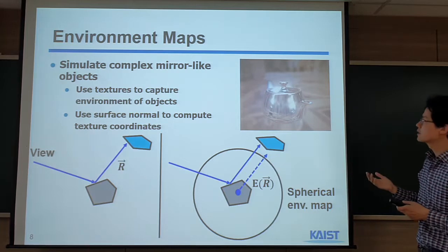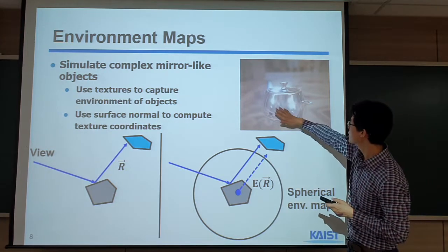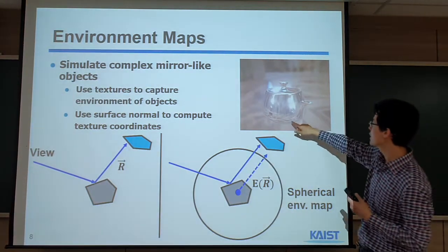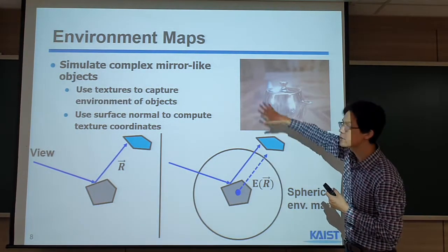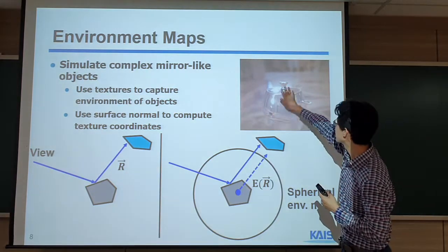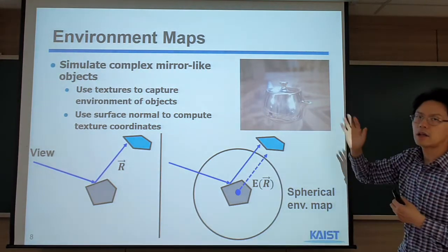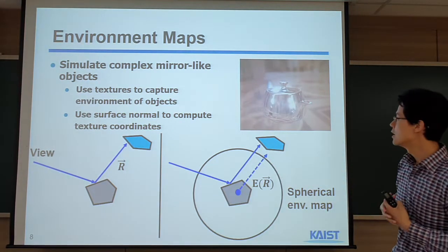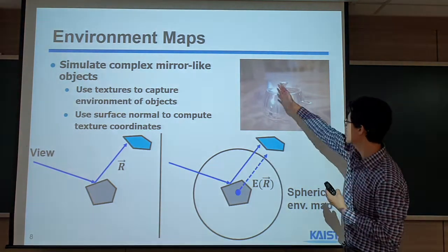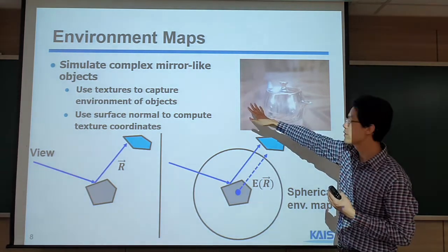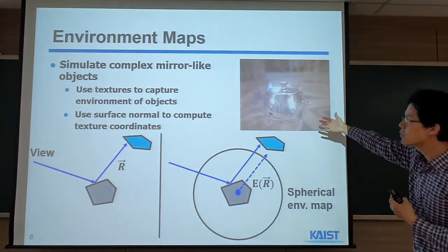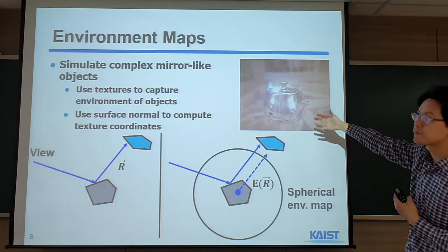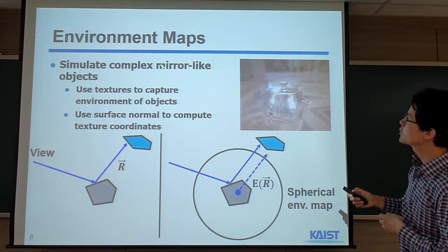Another one: suppose I have this kind of teapot. It's very glossy, it's a metal-like one. You can see the surrounding region on the surface of the teapot — this teapot looks like a mirror. It reflects incoming light energy. We can see surrounding images reflected on the surface. The question is how we want to support this reflection effect. Along that line, we can use the environment map.